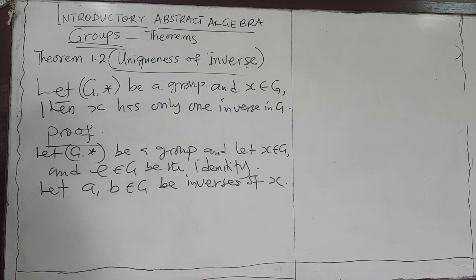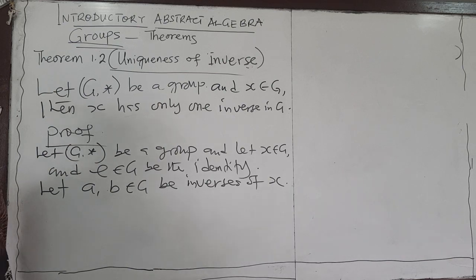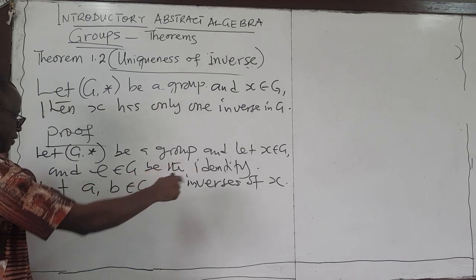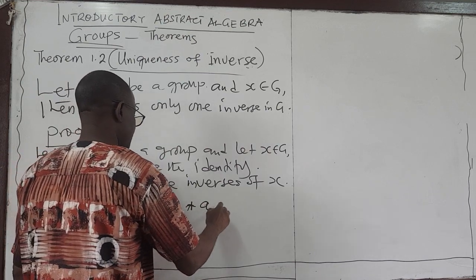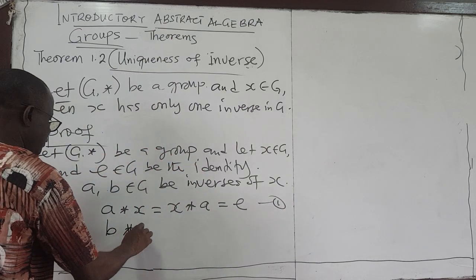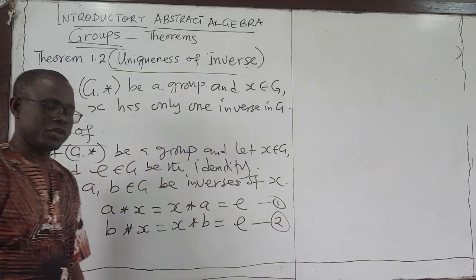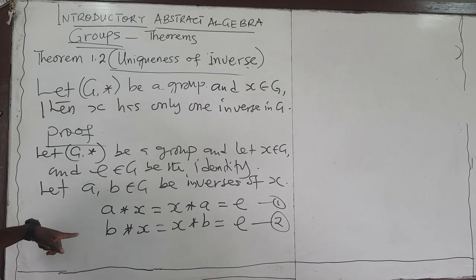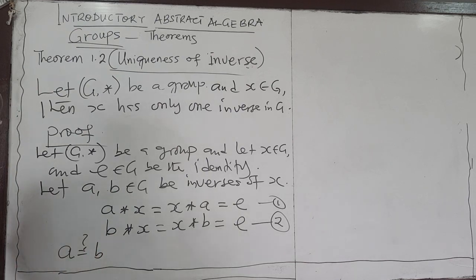From the definition of a group, if A is the inverse of X, then A★X = X★A = E, the identity element. Call this equation 1. Since B is also an inverse of X, B★X = X★B = E. Call that equation 2. We want to show that A equals B — this is what we are going toward, so always keep an eye on that.